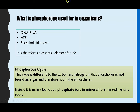The phosphorus cycle is different to the carbon and nitrogen cycles — the nitrogen cycle is on the A-Level spec. The key difference is that you don't get phosphorus as a gas in the atmosphere. Instead, the main store is as phosphate ions in rocks, the mineral form, so we won't have a stage where it exists as an atmospheric gas.